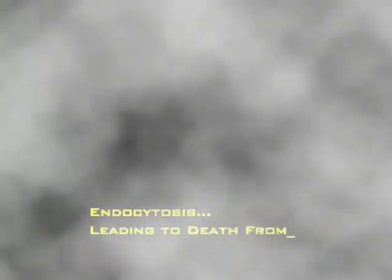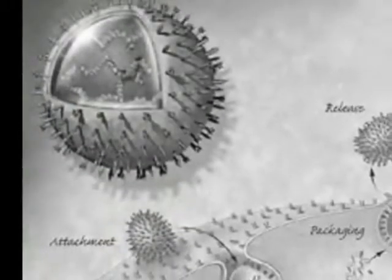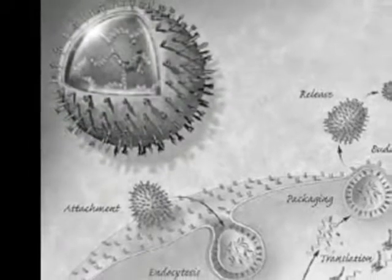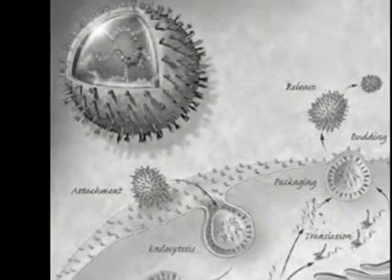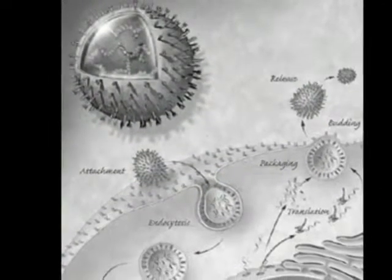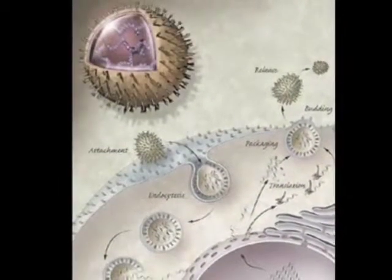Let's get started. Viruses must replicate by using cellular machinery and therefore must find some way to get into the cytoplasm. They can either do this by breaching the cell membrane itself or through clathrin-mediated endocytosis and subsequent escape from cellular compartments.